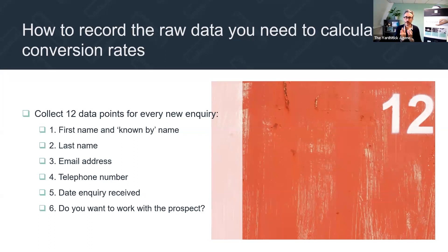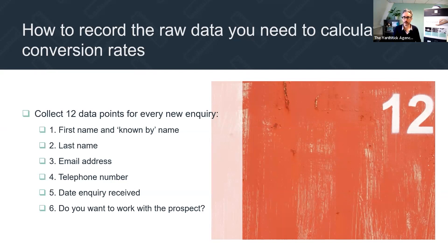Data point six is one that very few firms actually record when we start working with them, but it's really important. It's a simple gut feel: do you want to work with this prospect? You might know from that first email, after the first phone call, or you'll certainly know after the first meeting. Is this person — by whatever metrics you want to measure — the right fit for your business?